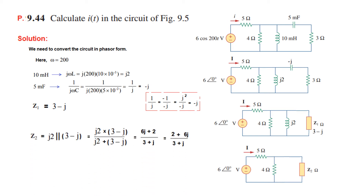Z2 is j2 and Z1 (which is 3 minus j) in parallel. We multiply at the top and add at the bottom.